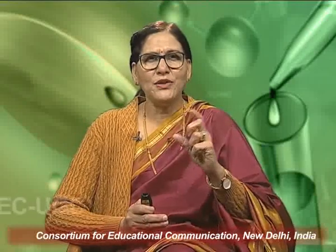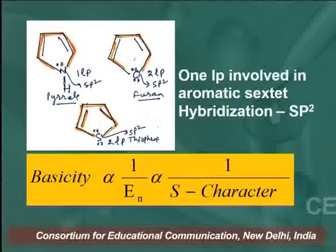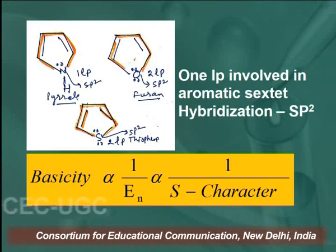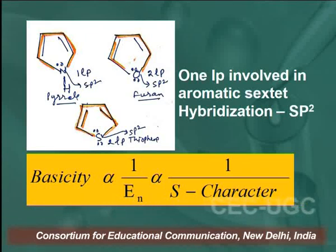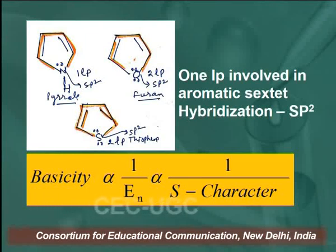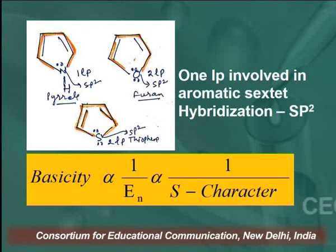In pyrrole, one lone pair of electrons is present in an sp2 hybridized orbital. Similarly, in thiophene and furan, two lone pairs of electrons are present in sp2 hybridized orbitals. Remember, basicity is directly proportional to 1 over electronegativity, and also depends upon s-character. Here, all the lone pairs of electrons are present in sp2 hybridized orbitals.